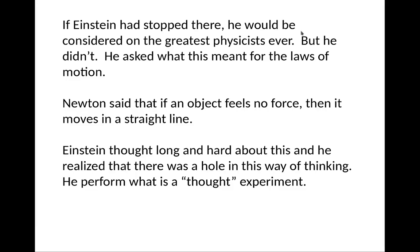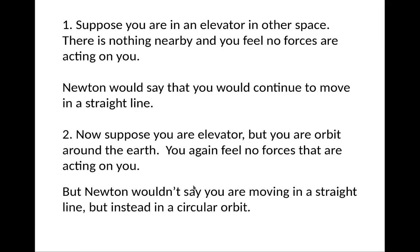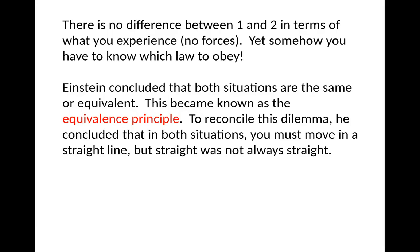So Newton said, if the object's experiencing no force, they move in a straight line. So Einstein thought long and hard about this. He wondered if there was a whole new way of thinking. So he performed what is another thought experiment. Suppose you're in an elevator in outer space. There's nothing nearby and you feel no forces acting on you. Newton would say you will continue to move in a straight line. Now suppose you're in an elevator, but you're moving in orbit around the Earth. You, again, will feel no forces acting on you. But Newton wouldn't say you're moving in a straight line, he'd say you're moving in a circular orbit. So what's the difference between number one and two? There's no force in either number one or two, but somehow you have to know which law to obey. So what Einstein concludes is that both situations are equivalent, and this is known as equivalence principle. To reconcile this dilemma, he had concluded in both situations, you must move in a straight line, but straight lines are not always straight.